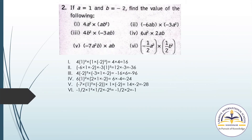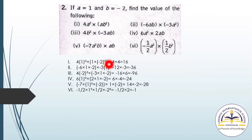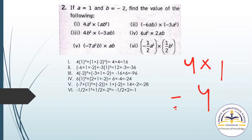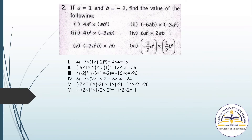Question number 2: If a equals 1 and b equals −2, find the value of the following. You substitute: in place of a put 1, in place of b put minus 2. So 4 times 1² times (−2)²: 4 times 1 is 4, (−2)² is 4, so 4 times 4 is 16. The answer is 16.